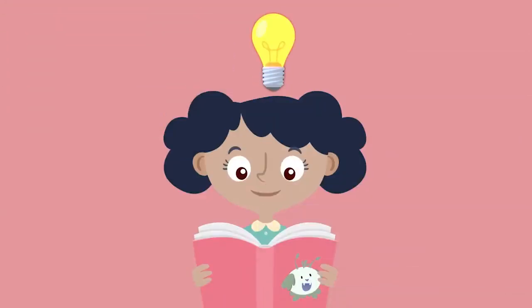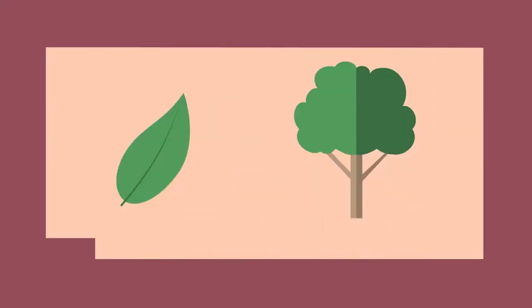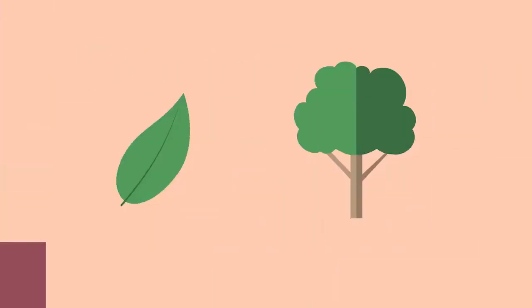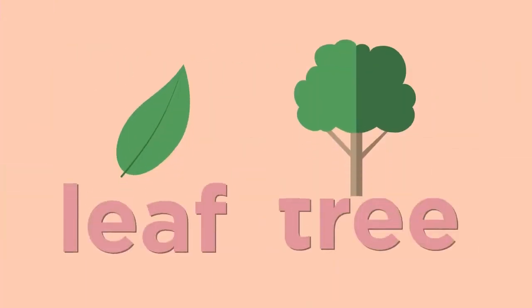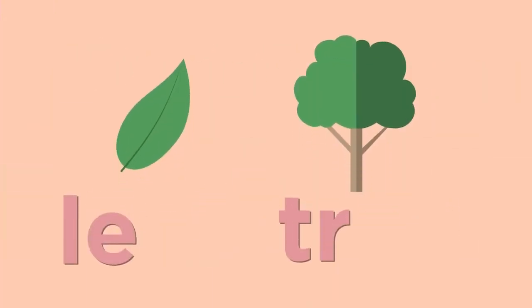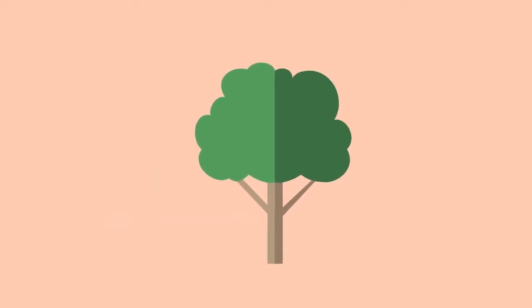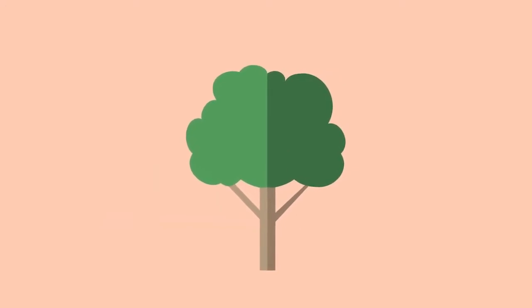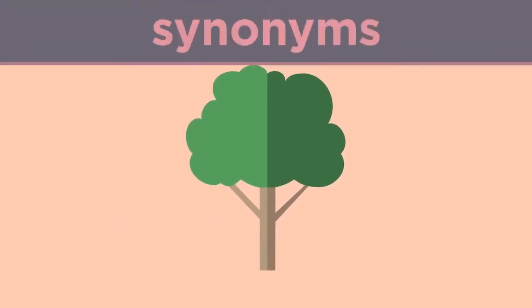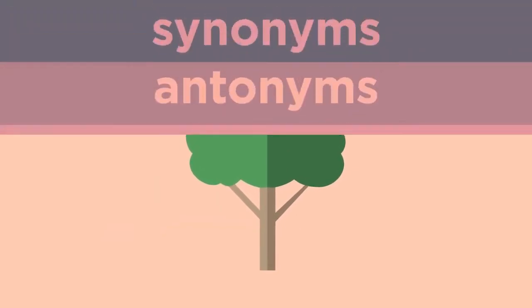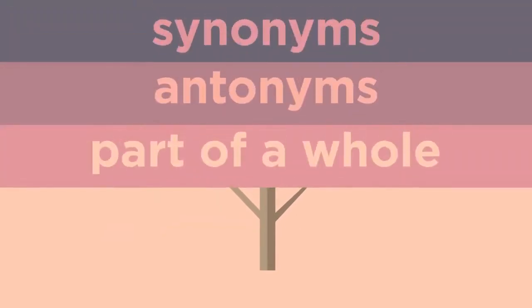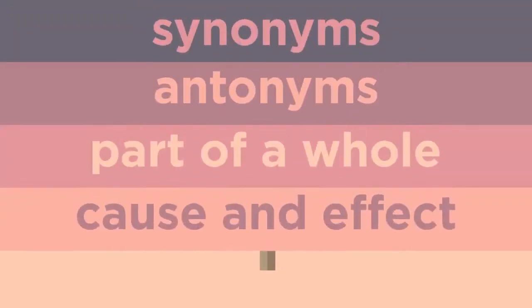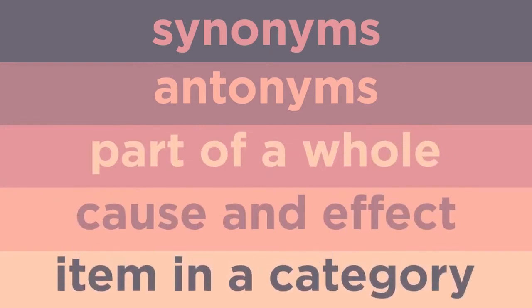Analogies show how words are related. For example, leaf to tree. Here are some types of analogies: synonyms, antonyms, part of a whole, cause and effect, and items in a category.